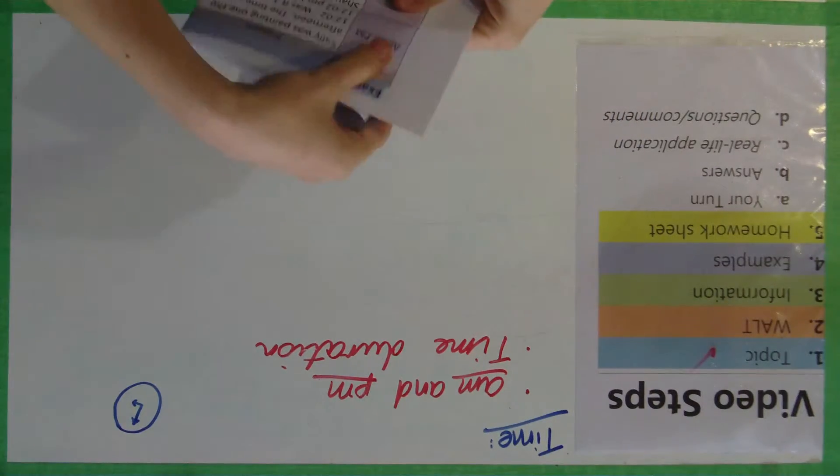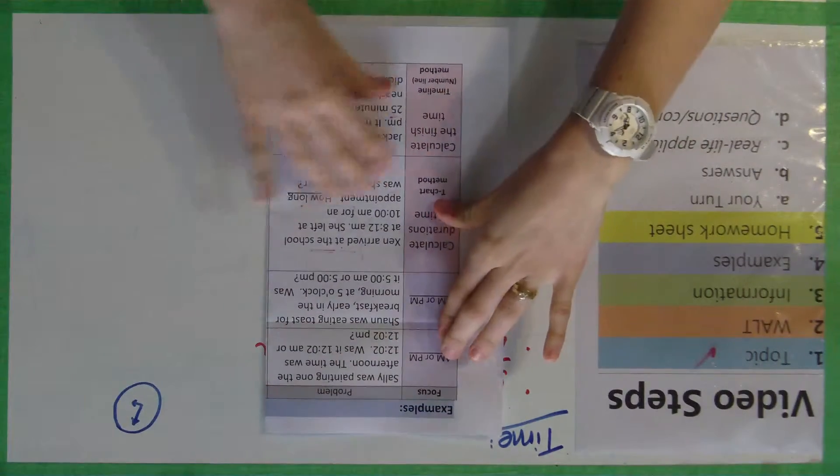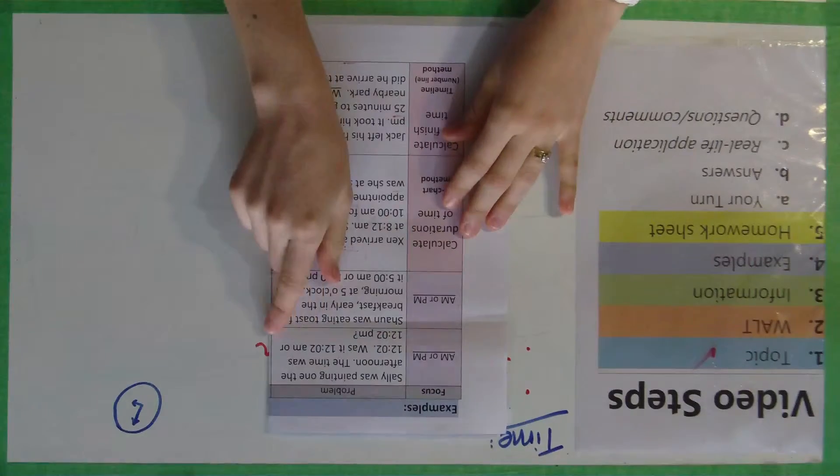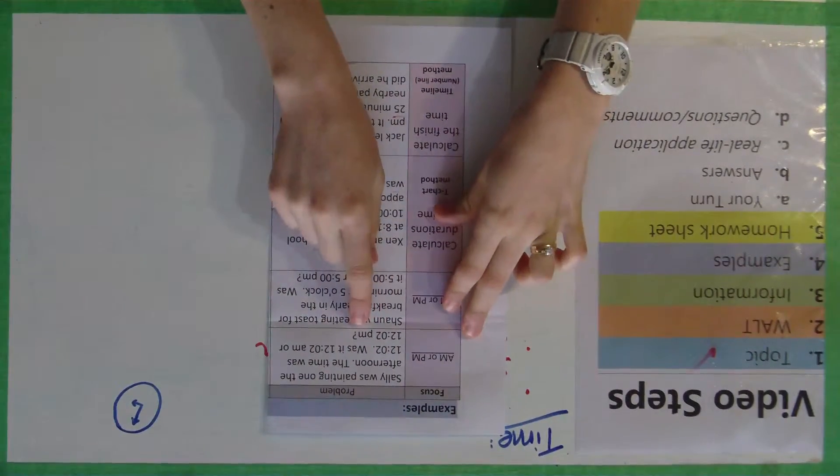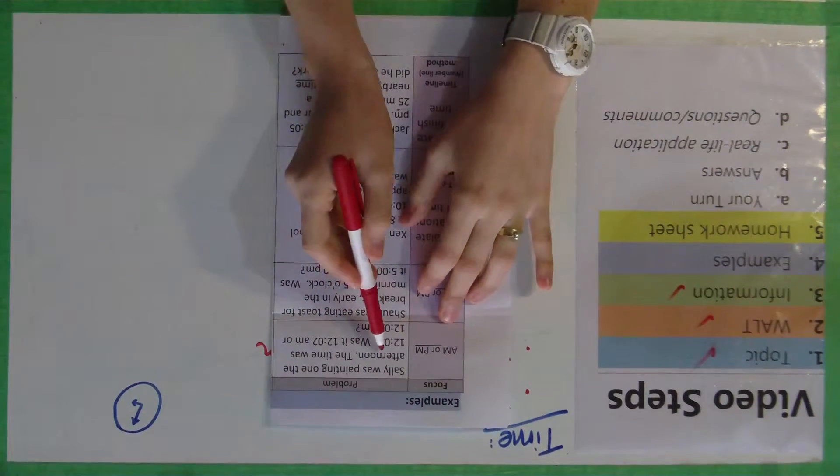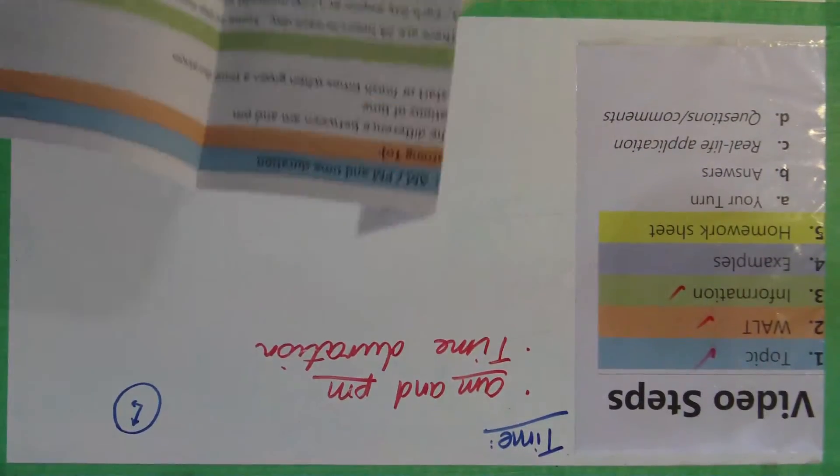Sally was painting one afternoon. The time was 12:02. Was it 12:02 a.m. or 12:02 p.m.? For this one here, if we know it's in the afternoon, if you look back, that would mean it would be sunny, it would be afternoon time,